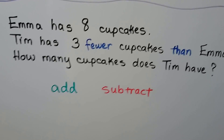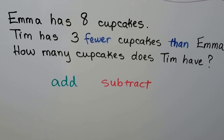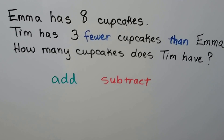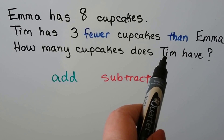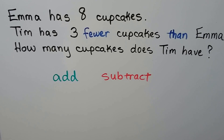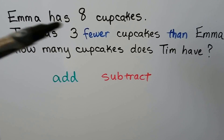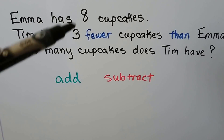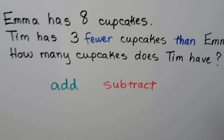Emma has eight cupcakes. Tim has three fewer cupcakes than Emma — how many cupcakes does Tim have? 'Fewer' means he has three less than Emma. We need to find the difference between eight and three, and to find a difference we need to subtract.